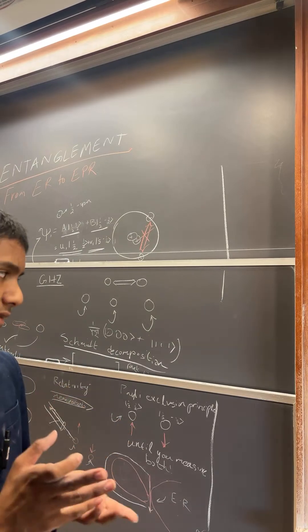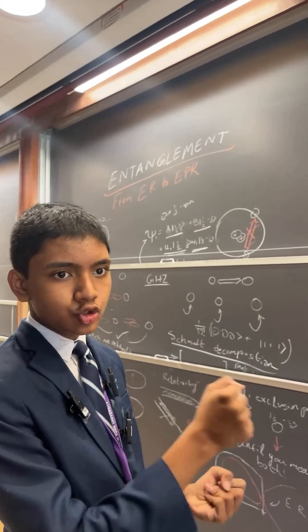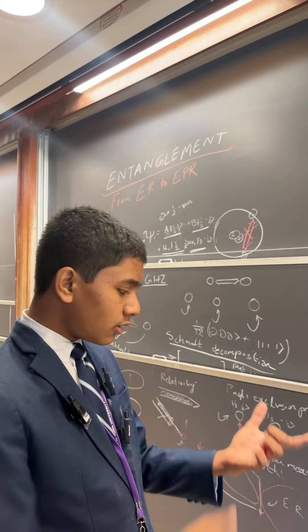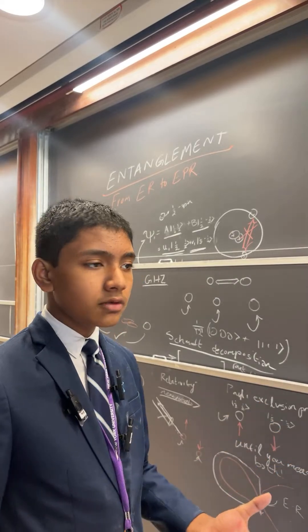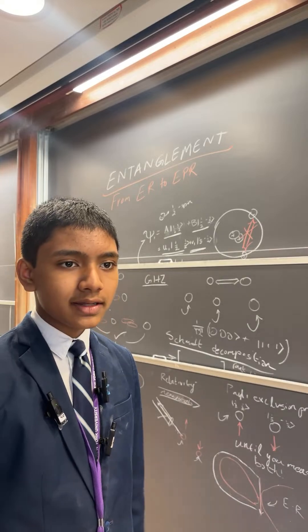Now, what is entanglement really? When we have the wave function that describes two particles at once, sometimes we can factor it. And so, we can know the state of one particle without knowing the state of the other. We can measure one, and boom, we know it.